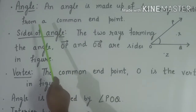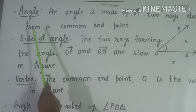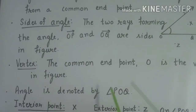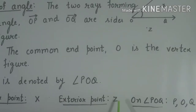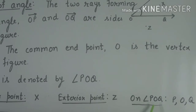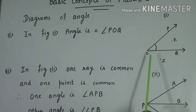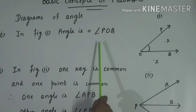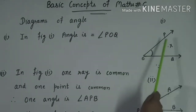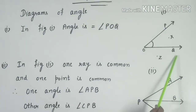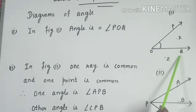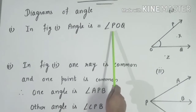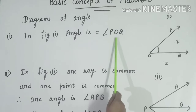So we have discussed the topics: angle, sides of angle, vertex, interior point, exterior point, and point on angle POQ. We have also discussed the first figure in which we denote the angle POQ.